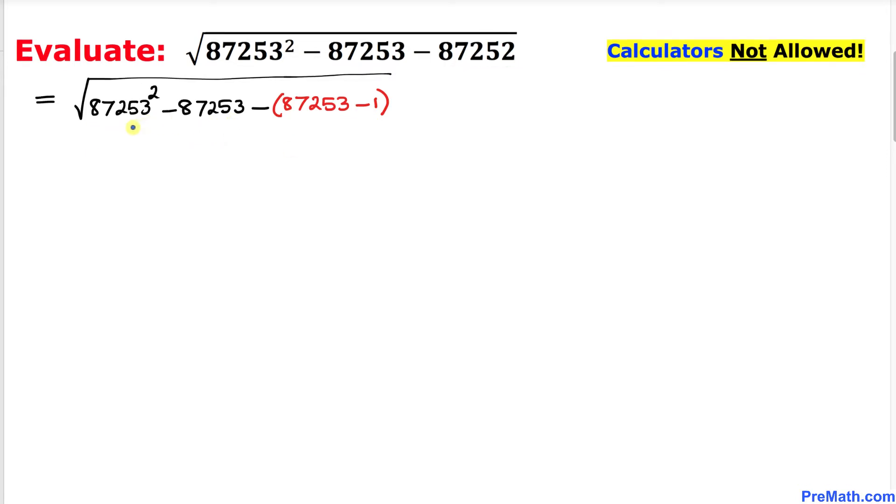And now we can see that these numbers are identical: 87253, 87253, and likewise this number. So let me go ahead and make a substitution. I'm going to say let a equals 87253.